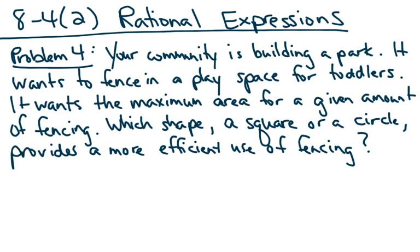We're only going to talk about one problem here in the second half of Rational Expressions. Your community is building a park. It wants to fence in a play space for toddlers. It wants the maximum area for a given amount of fencing. Which shape, a square or a circle, provides a more efficient use of fencing?